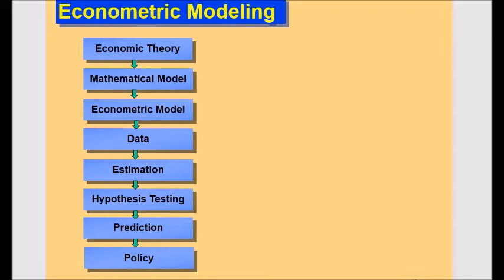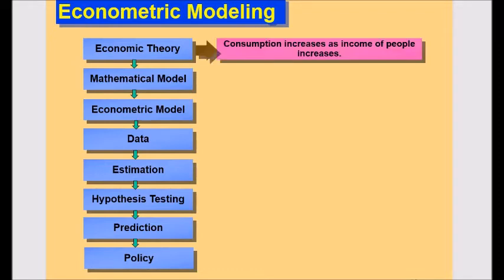Now, I will explain these steps one by one. For first step, use an economics theory. For instance, in this example, I will use this theory that consumption increases as income of people increases.